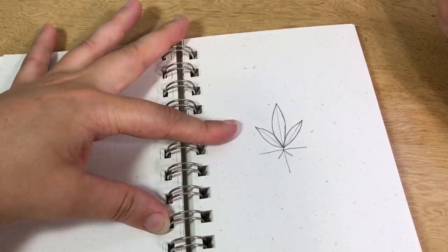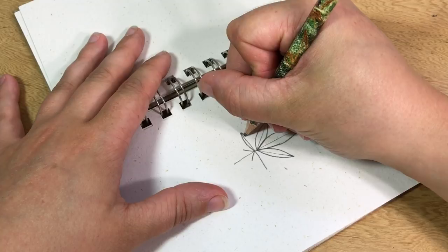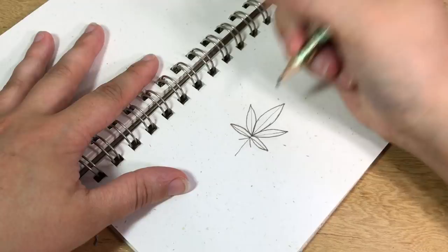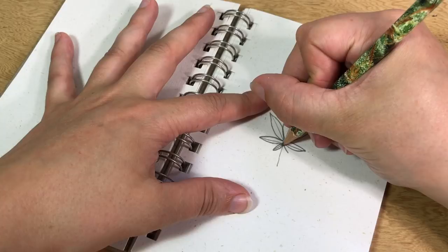Now we're gonna do that to these two parts of the leaf. There we go. Get these last two little bits down at the bottom, and boom! You just learned one way to draw a pot leaf. With a little